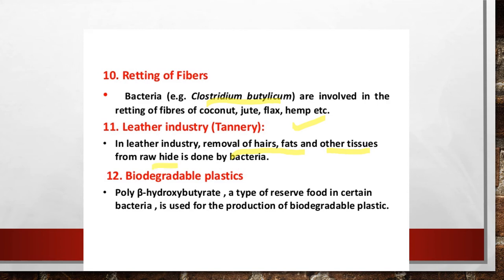In the leather industry (tannery), bacteria are used for the removal of hairs, fat, and other tissues from the raw hide or raw skin of the animal. Additionally, poly-beta-hydroxybutyrate is a type of reserve food in certain bacteria and is used for the production of biodegradable plastics.